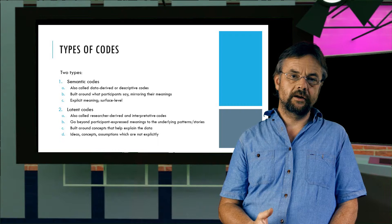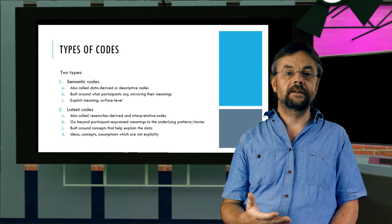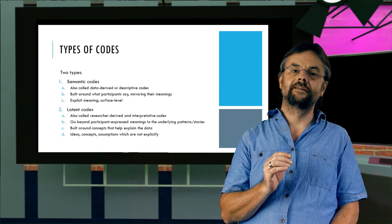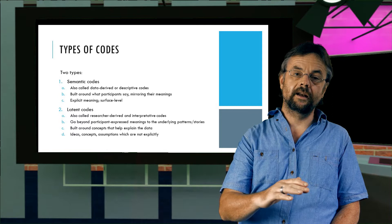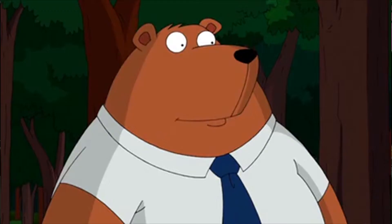Now, there are two types of code. Semantic codes, also called data derived or descriptive codes. And this is built on what participants actually say, mirroring what they say. This is quite surface level. There are also latent codes, which are interpretative codes. And these go beyond what a participant says and reflects underlying meanings of patterns. These are more focused on ideas, concepts, and assumptions upon which the participant supports rest.